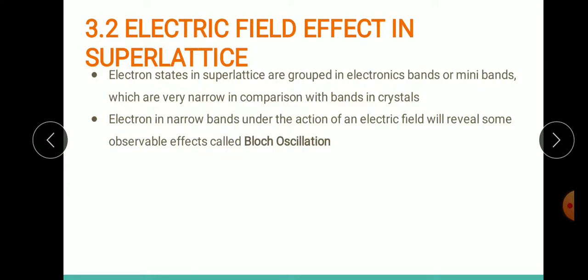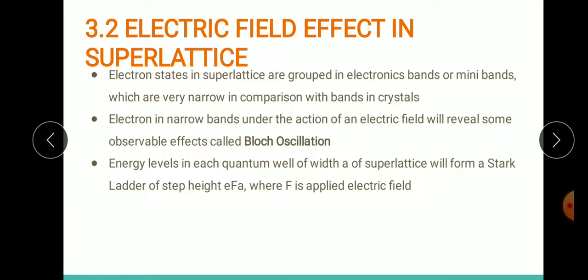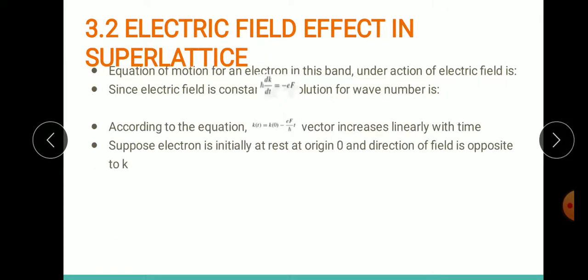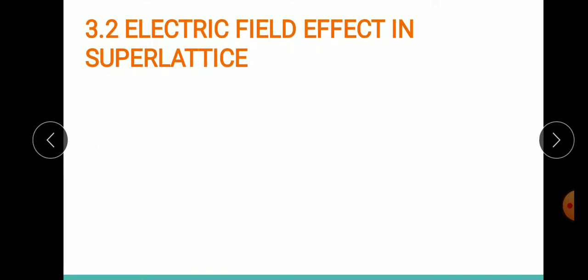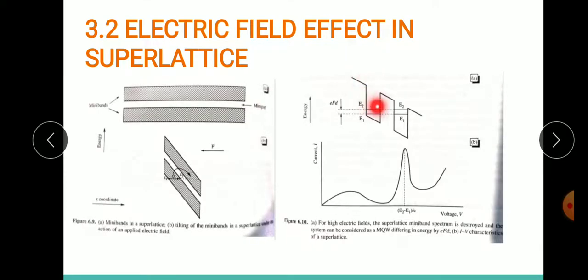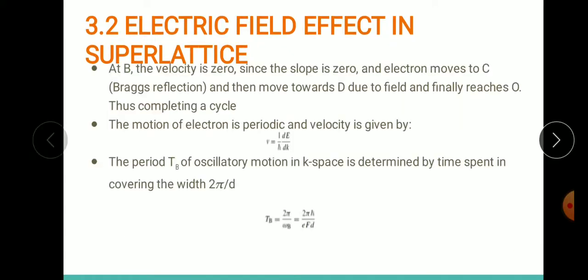Each quantum well of width A forms energy levels. When they form a superlattice, these energy levels have a particular arrangement called the Stark ladder — simply a ladder-like arrangement. As we have seen in this section, there is a ladder arrangement, and this tilt or ladder arrangement is called the Stark ladder for a superlattice.